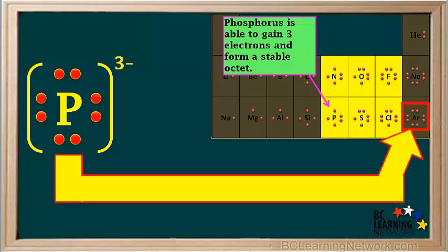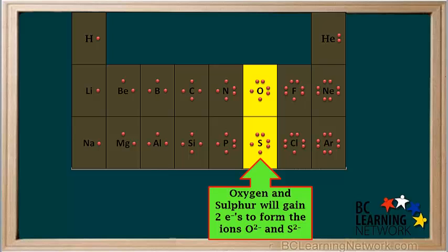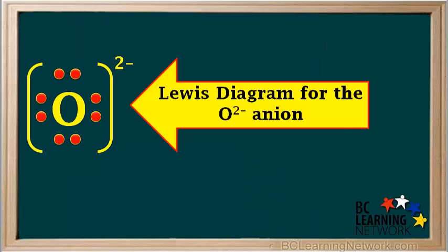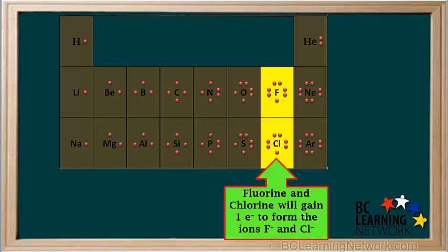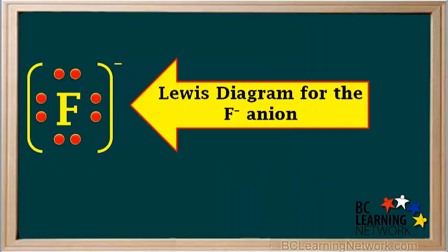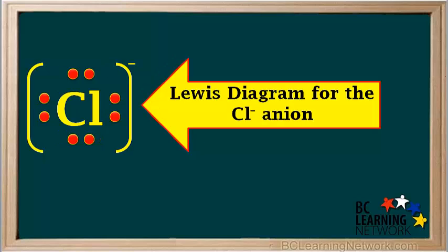Looking at oxygen and sulfur in group 16, these each have two unpaired electrons, so they can gain two electrons and form the 2− ions: O2− and S2−. Here is the Lewis diagram for the O2−, or oxide anion, and here is the Lewis diagram for the S2−, or sulfide anion. Looking at fluorine and chlorine in group 17, these each have one unpaired electron, so they can gain one electron and form the minus ions: F− and Cl−. Here's the Lewis diagram for F−, or the fluoride anion, and here's the Lewis diagram for Cl−, or the chloride anion.